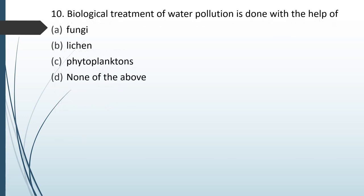Biological treatment of water pollution is done with help of: (A) fungi; (B) lichen; (C) phytoplanktons; (D) none of the above. The correct answer is option C — phytoplanktons.